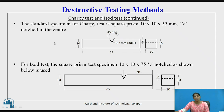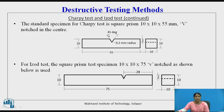The difference between the Charpy test and the IZOT test is the specimen. The specimen for the Charpy test is a square prism with dimensions 10 by 10 by 52 mm, with a V-notch in the center at 45 degrees and 0.2 mm radius.